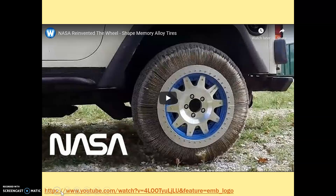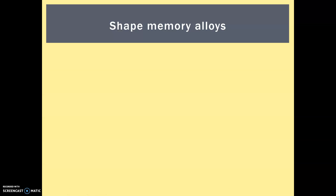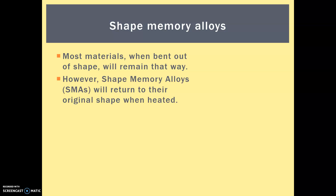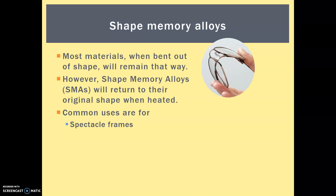This next video is on shape memory alloys — an application from NASA. Most materials when they're bent out of shape obviously remain that way, but shape memory alloys return to their original shape specifically when they are heated back up again. Common uses currently are for spectacle frames — if you were to sit down on your frames or damage them in your bag, you can just heat them back up again with a bit of boiling water and they will return to shape.